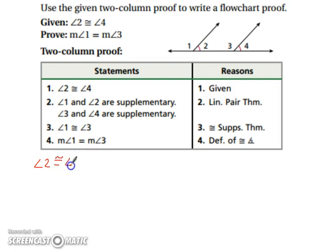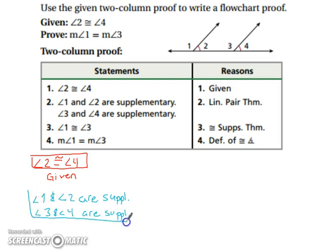Let's start with our given: we have angle two is congruent to angle four. And now we have angle one and angle two are supplementary and angle three and angle four are supplementary. The given didn't provide us with this information, so it's separate. So make sure there are no arrows going to this next piece. Let me put it in our box. And the reason is the linear pair theorem. Once again, no arrows are going between these two.